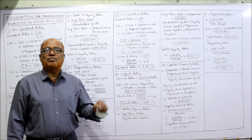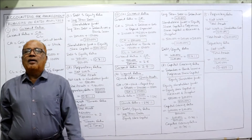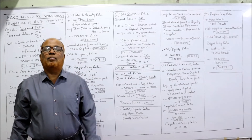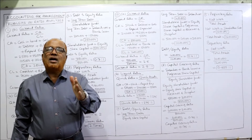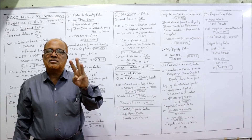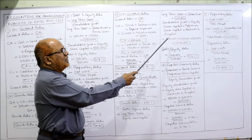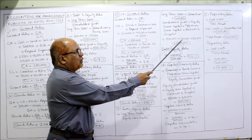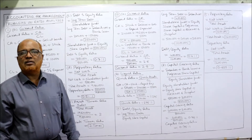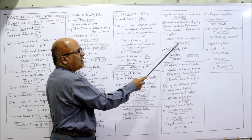Next: debt equity ratio. Long-term debt divided by shareholders fund. Long-term debt in this problem consists of only debentures — 4 lakh. Shareholders fund consists of three items: equity share capital 5 lakh, preference share capital 2 lakh, and reserves and surplus 3 lakh — totalling 10 lakh. Debt equity ratio: 4 lakh divided by 10 lakh equals 0.4 is to 1.